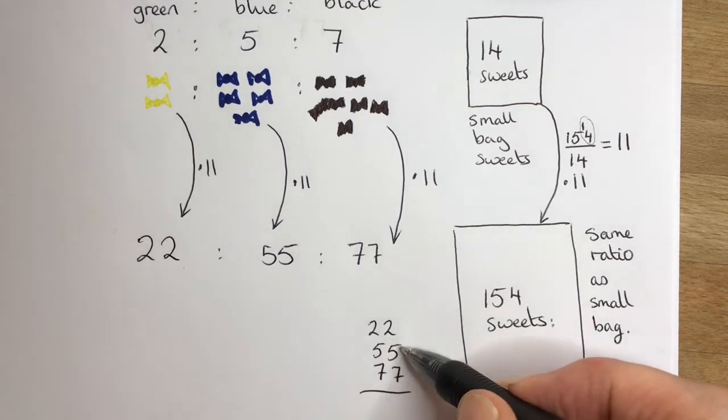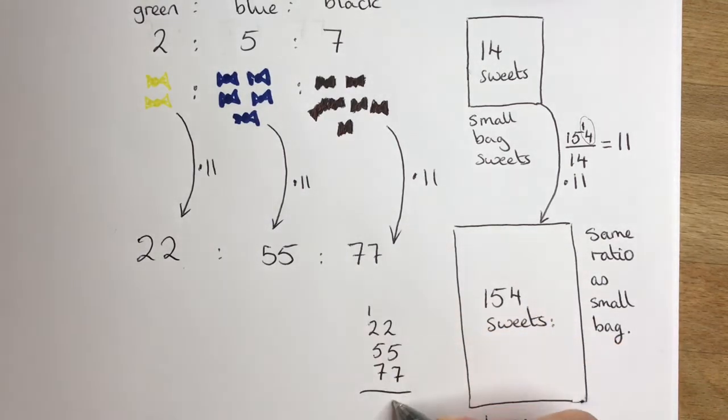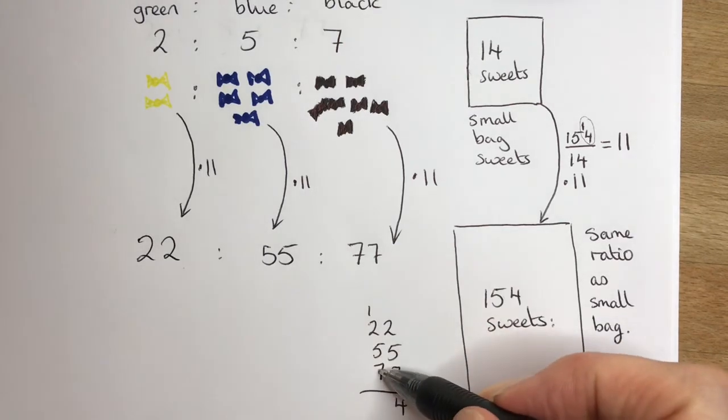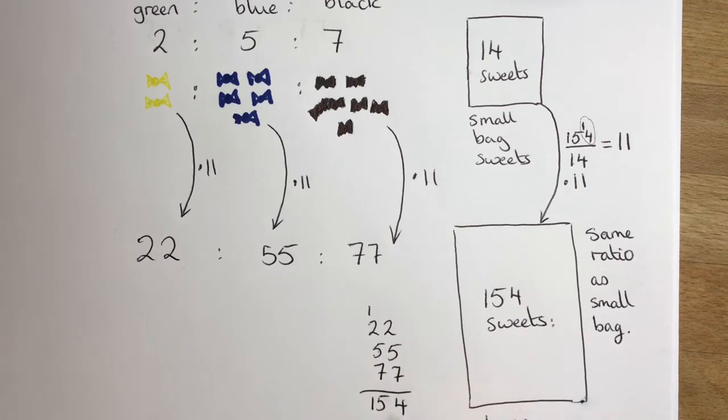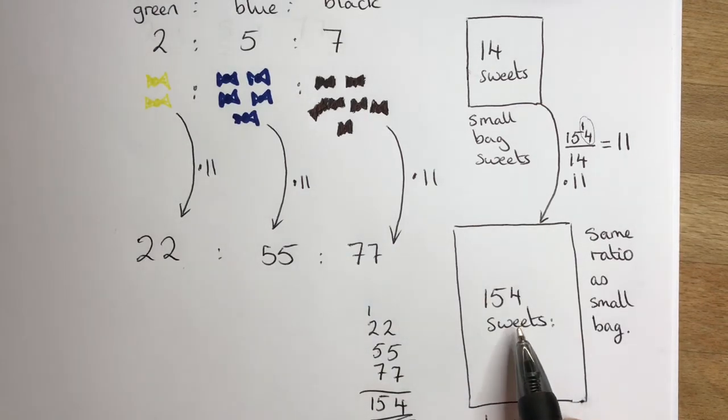7 and 5 is 12, plus 2 is 14. 7 and 5 is 12, plus 2 is 14, plus 1 is 15, so we get 154, which is the total number of sweets we should have got.